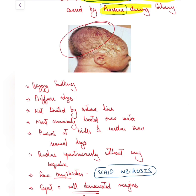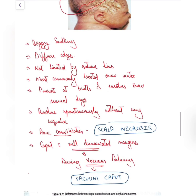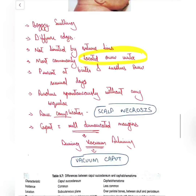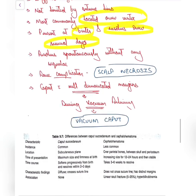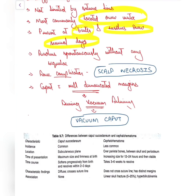It is a boggy swelling. The edges are diffuse in nature and it crosses the suture line. It is most commonly located over the vertex, as that is the most common presenting part. Maximum size occurs at birth and it resolves spontaneously over several days. As it resolves spontaneously without any sequelae, no intervention is required — we just counsel the parents regarding its benign nature.